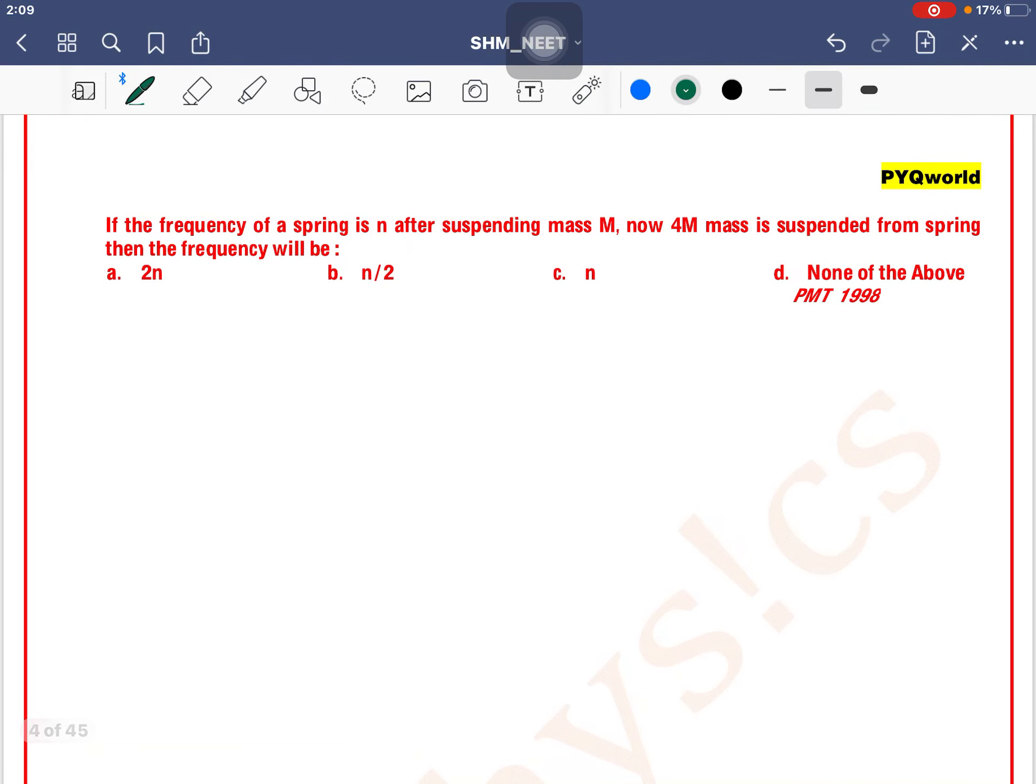If the frequency of a spring is n after suspending mass m, now 4m mass is suspended from the spring, then the frequency will be... So we know that the frequency of a spring-block system is f equals